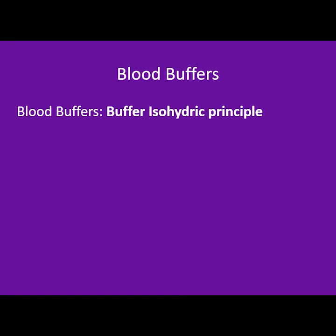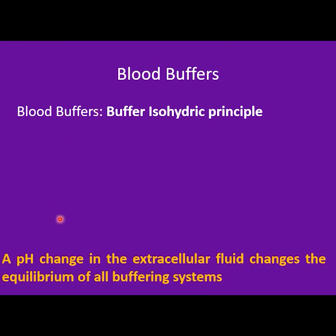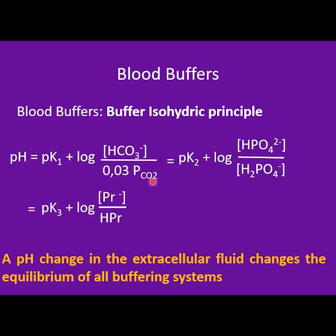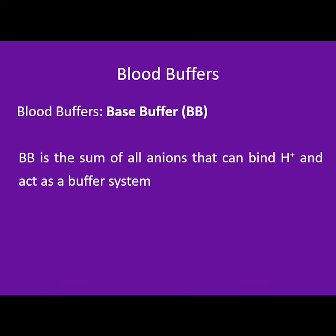What happens when all buffers coexist in the same system? The isohydric principle states that if pH changes, all the equilibria of all buffering systems will change simultaneously. For example, a pH change alters the concentrations of bicarbonate and carbon dioxide, the monoacid and diacid forms of phosphate, the acid and base forms of proteins, the acid and base forms of hemoglobin, and so on. To estimate the buffering capacity of a patient, you can calculate the buffer base — the sum of all anions that combine with protons and act as a buffer.